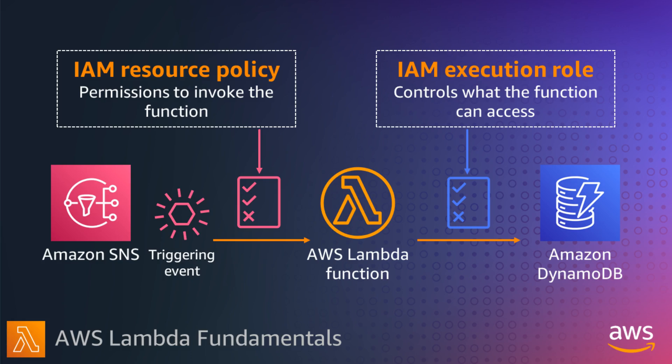The second is an IAM execution role that defines what the function is allowed to do when interacting with other AWS services. Lambda assumes this role to run your function. For example, if your function needs access to write to DynamoDB, you specify the DynamoDB write access in the execution role. At a minimum, you need to give this execution role access to CloudWatch logs for log streaming.